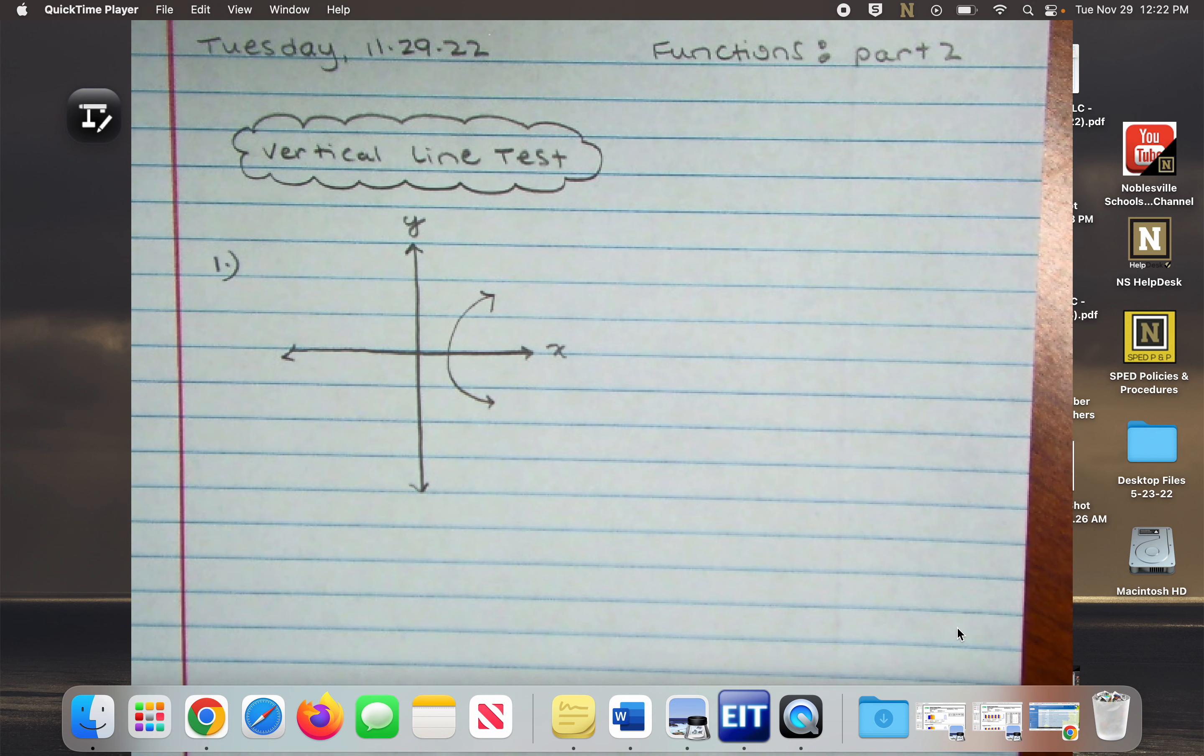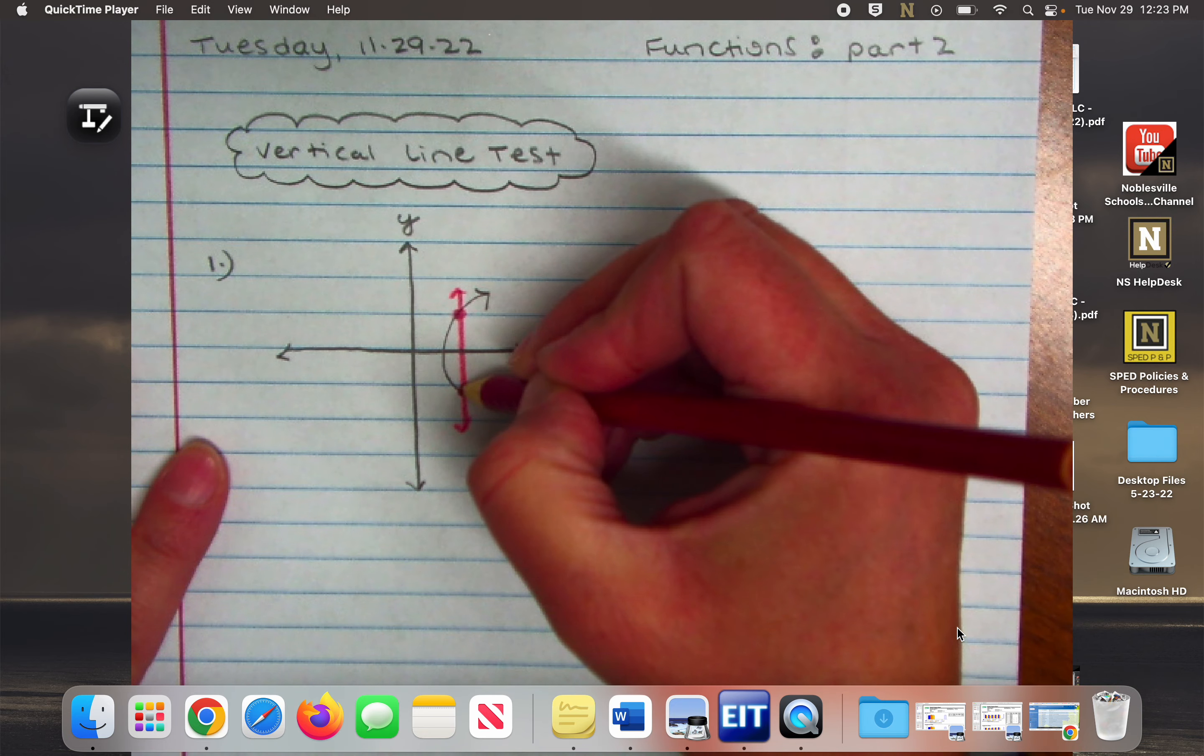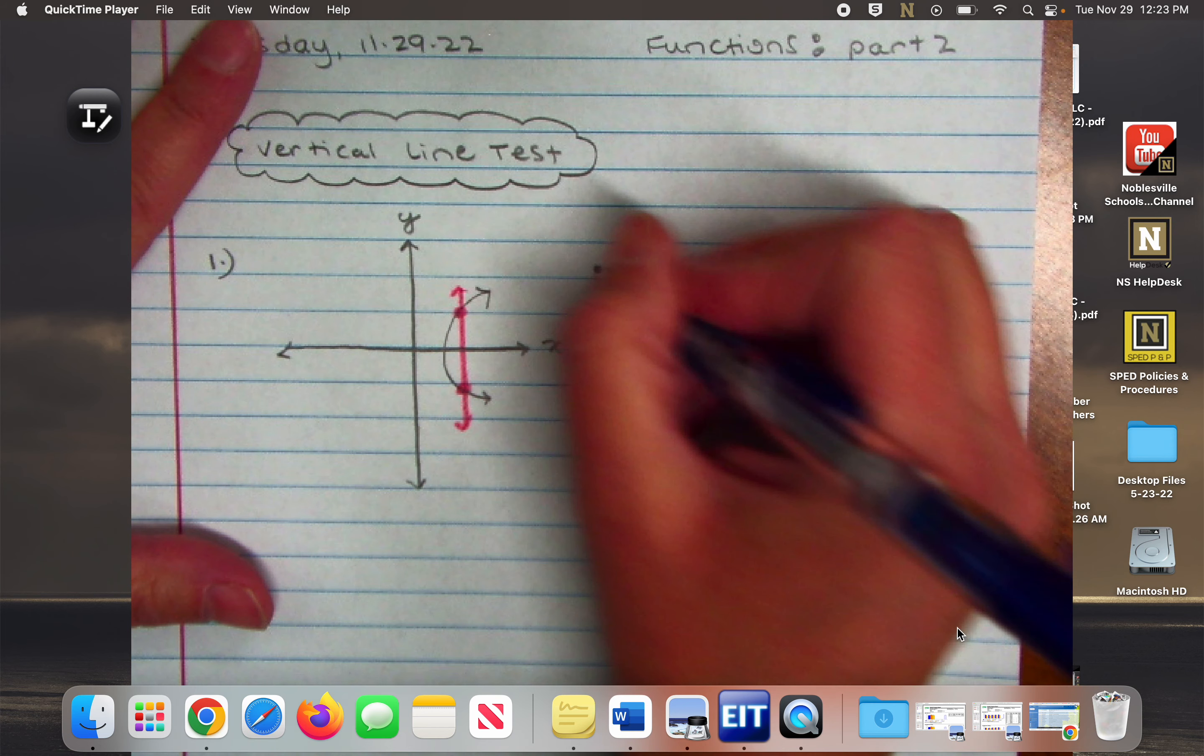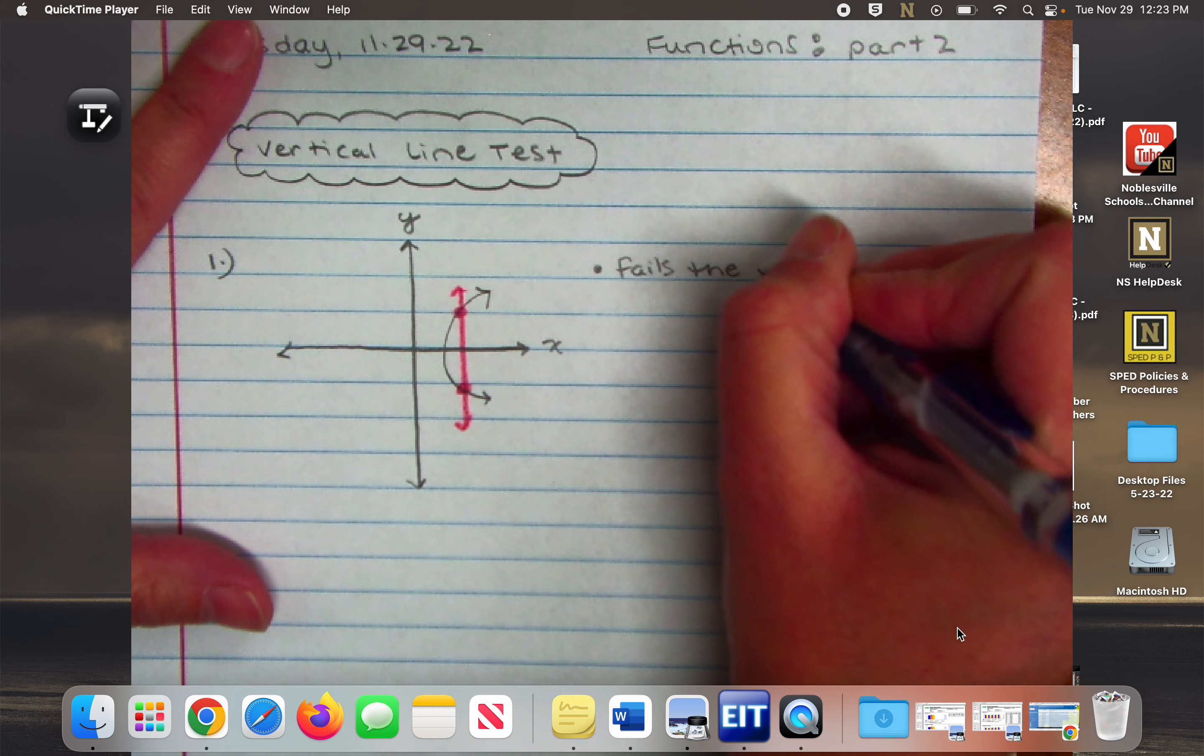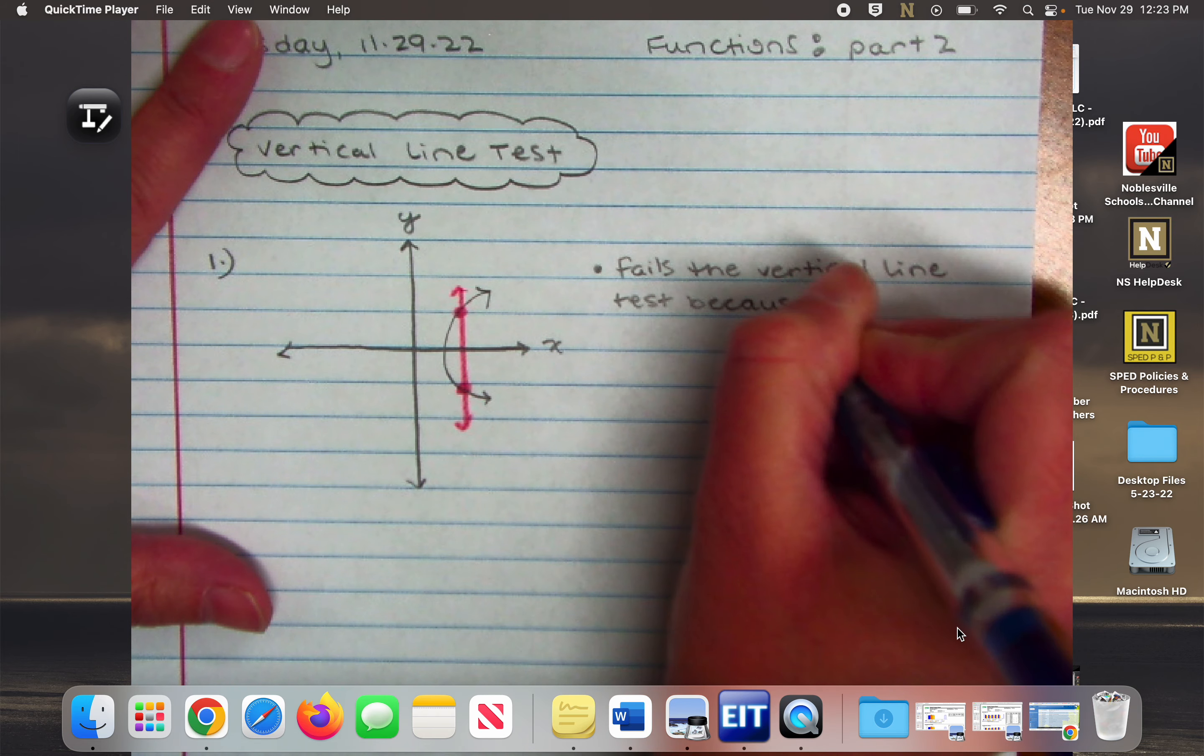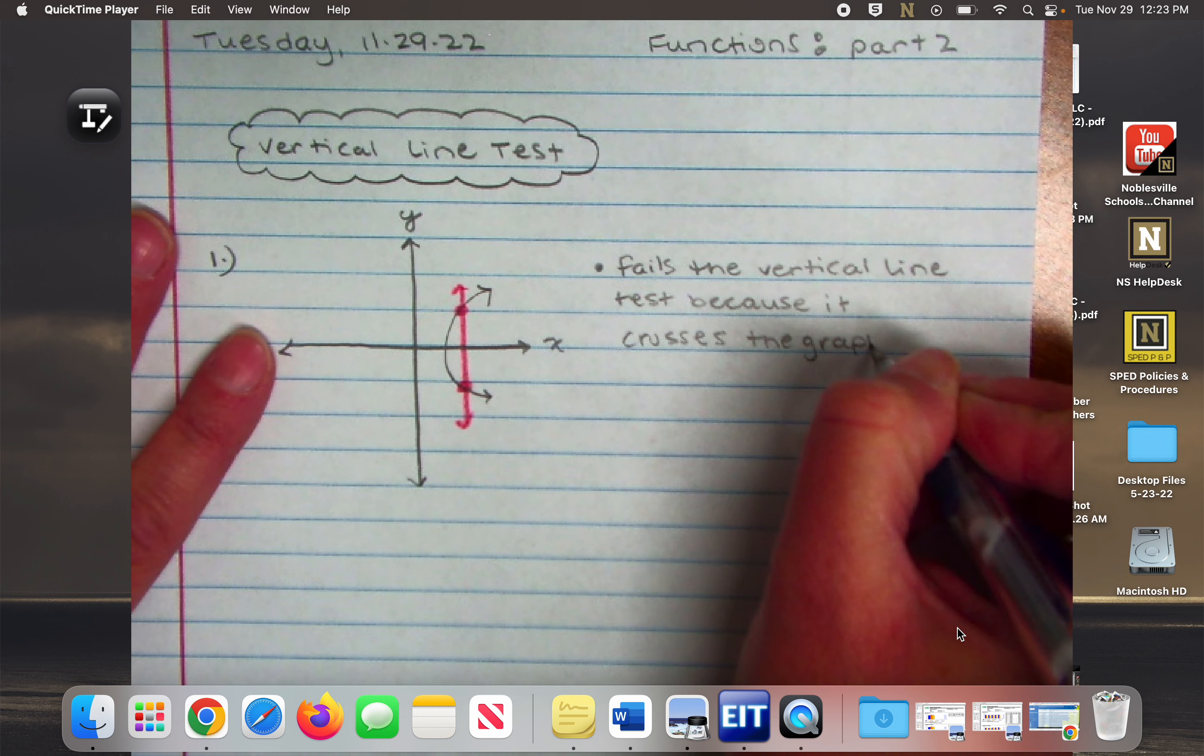So if I were to take my red pencil and draw a vertical line, is it going to go through that graph more than once? No. Right, so if I draw a red line, is it going to go through the graph more than once at any two points? It is. And what that means is that that x value was used more than once. And what's the rule if the x value is used more than once? It's not a function. It's not a function, right? So because I can draw a vertical line and it would go through more than one point on my graph, it fails the vertical line test and therefore it's not a function.